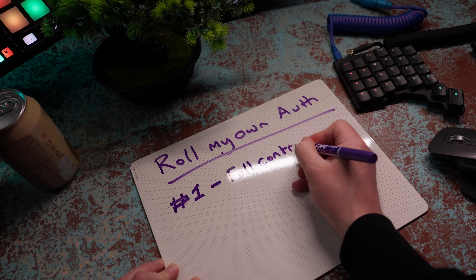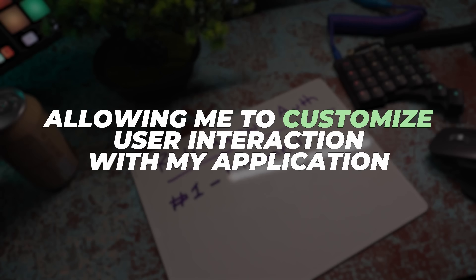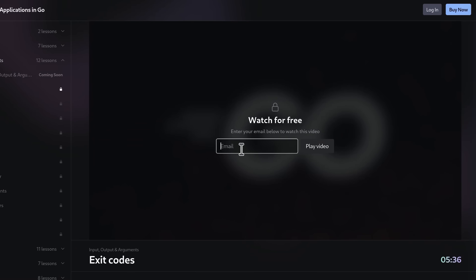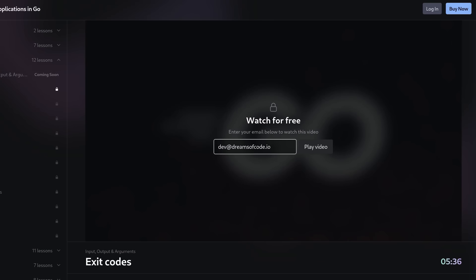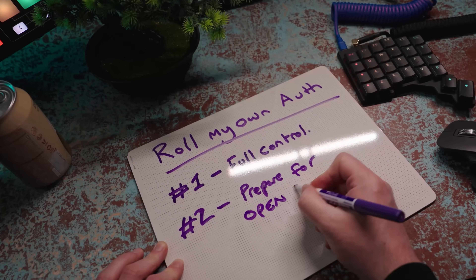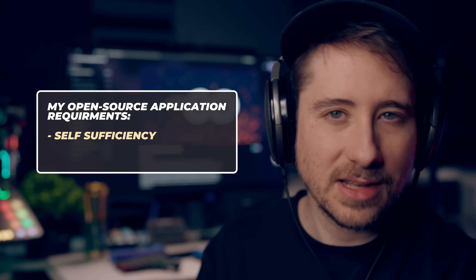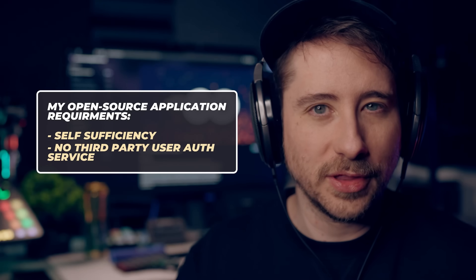The first of these is that I wanted to have full control over my authentication data and my user flow, which would allow me to better customise how a user interacted with my application. This meant I would be able to do some more custom onboarding flows, such as automatically creating an account when a user unlocks a video by entering their email, allowing the user to log in as easily as possible without needing to navigate away from the video they were currently watching. The second and most major reason was that I eventually planned to make this platform open source, so that others can use it to host their own courses. This meant the platform itself would need to be self-sufficient, and not force any users to use a third-party authentication service.